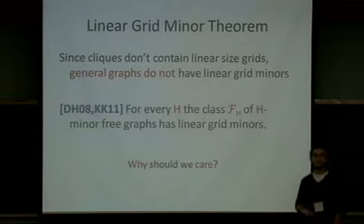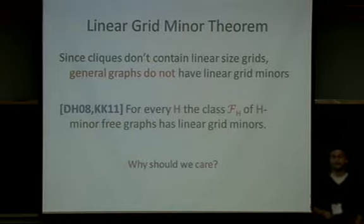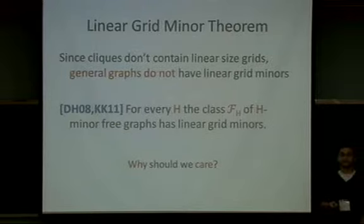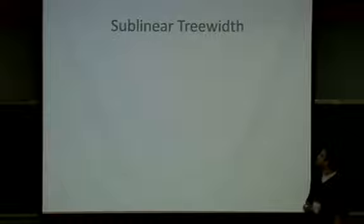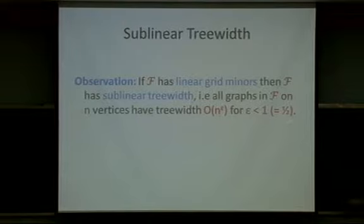The question is: why should we care? I'll try to convince you that this seemingly innocent statement allows you to prove a wealth of algorithms for problems on H-minor-free graphs, or more generally on graph classes that have linear grid minors, where the only thing we know about the graph class is that it has linear grid minors. The first observation is that if you have linear grid minors, then you have sublinear tree width — meaning if I take a graph G in the class on N vertices, then the tree width is at most N^ε for some ε < 1. Specifically, the tree width of any graph on N vertices is at most roughly √N, because a T×T grid needs T² vertices.